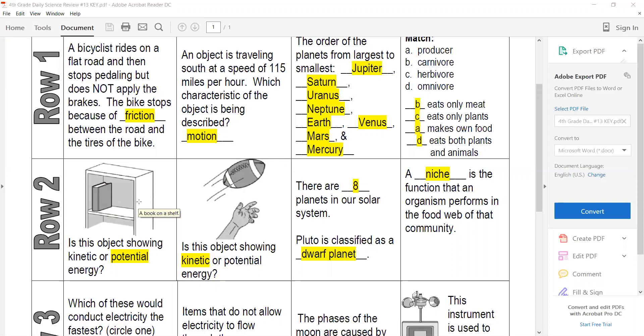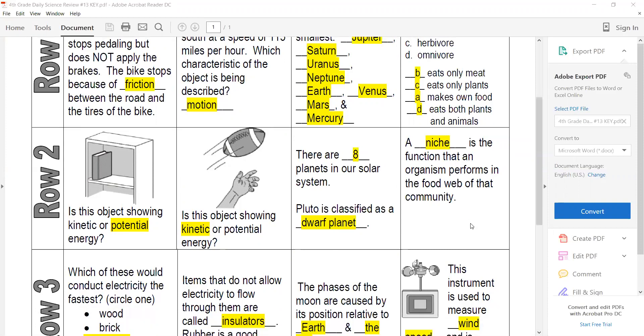There are eight planets in our solar system, and Pluto's a dwarf planet. A niche is your job or your function that an organism plays in the food web of that community, and that can be a plant or an animal.